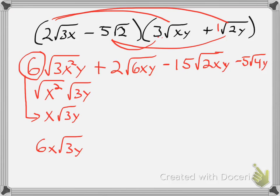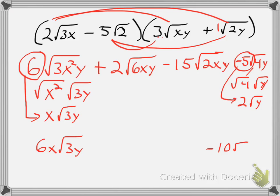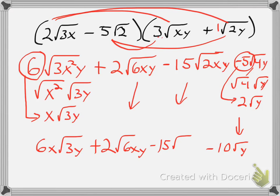My last term: I can take the square root of 4. So I have the square root of 4 and then the square root of y. The square root of 4 becomes 2. The square root of y is still the square root of y. Now I'll take anything in front of my radical and multiply it times my 2, which will give me a minus 10 square root of y. Those are the two terms that I can reduce. The rest I'll just bring down, so plus 2 square root of 6xy minus 15 square root of 2xy.